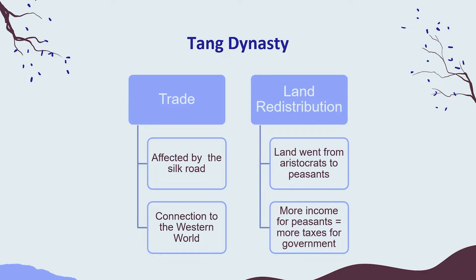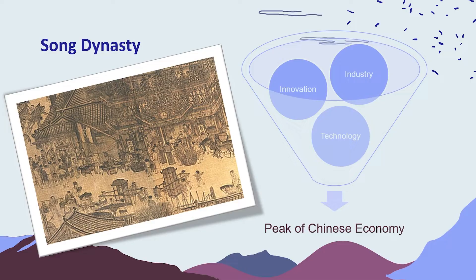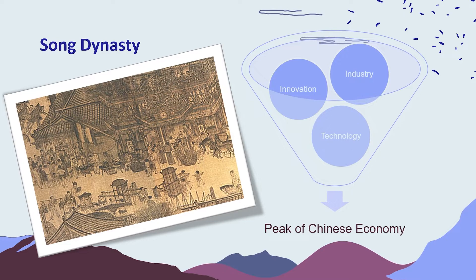In the Song dynasty, their economy was similar to that of the Tang dynasty but had even more growth. Three main things they capitalized on were industry, innovation, and technology. All three of these meant that the Song dynasty actually became the peak of Chinese economy throughout history.